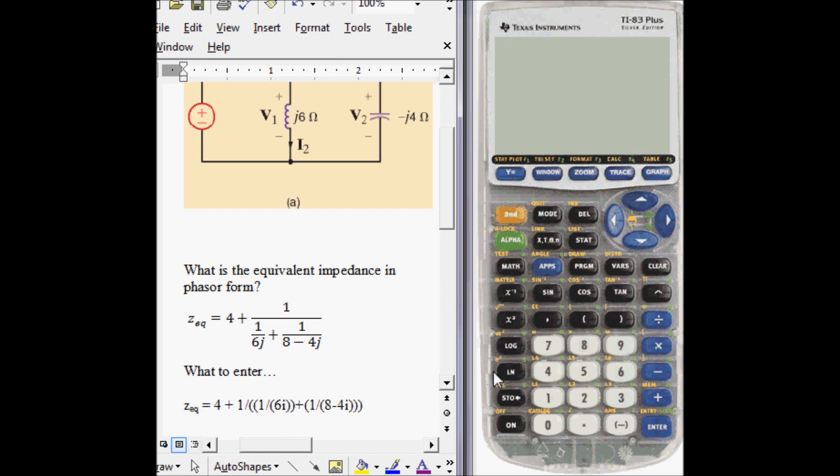So here's what you want to enter. I'm going to do it step by step. Four plus one divided by, open parenthesis, open two actually, one divided by six I. I is over the decimal point. Close those two, plus open one divided by eight minus four I. Four I. And then close them all out.